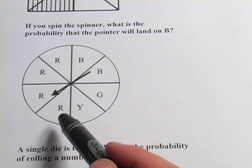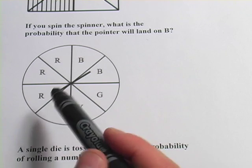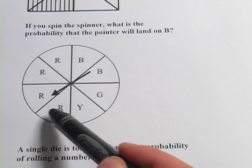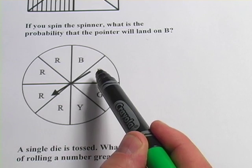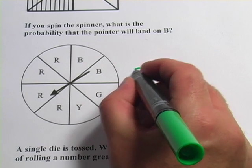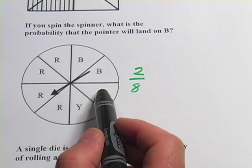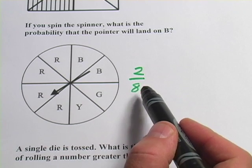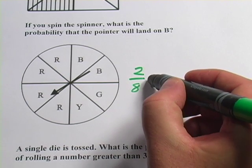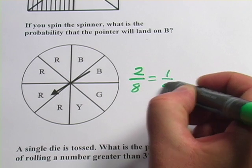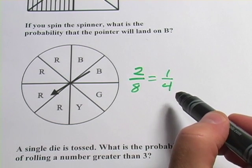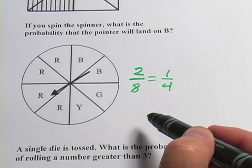And then I want to count how many chances there are for it to be B. And it looks like we've got 4 R's, a Y, a G, and 2 B's. So there are 2 chances out of a total of 8 that the spinner would land on B. We can reduce this fraction though. I can take a 2 out of the top and bottom, and that would be 1 fourth. So it's a 1 in 4 chance that the spinner will land on B.